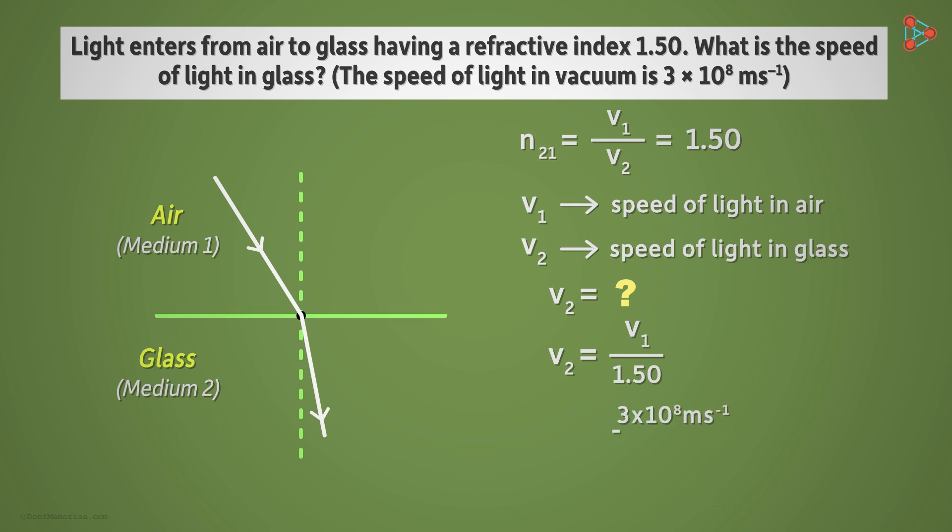After doing a bit of math, we will get the speed of light in glass as 2 times 10 to the power 8 meters per second. Don't forget the units. We see that the speed of light in glass is lesser.